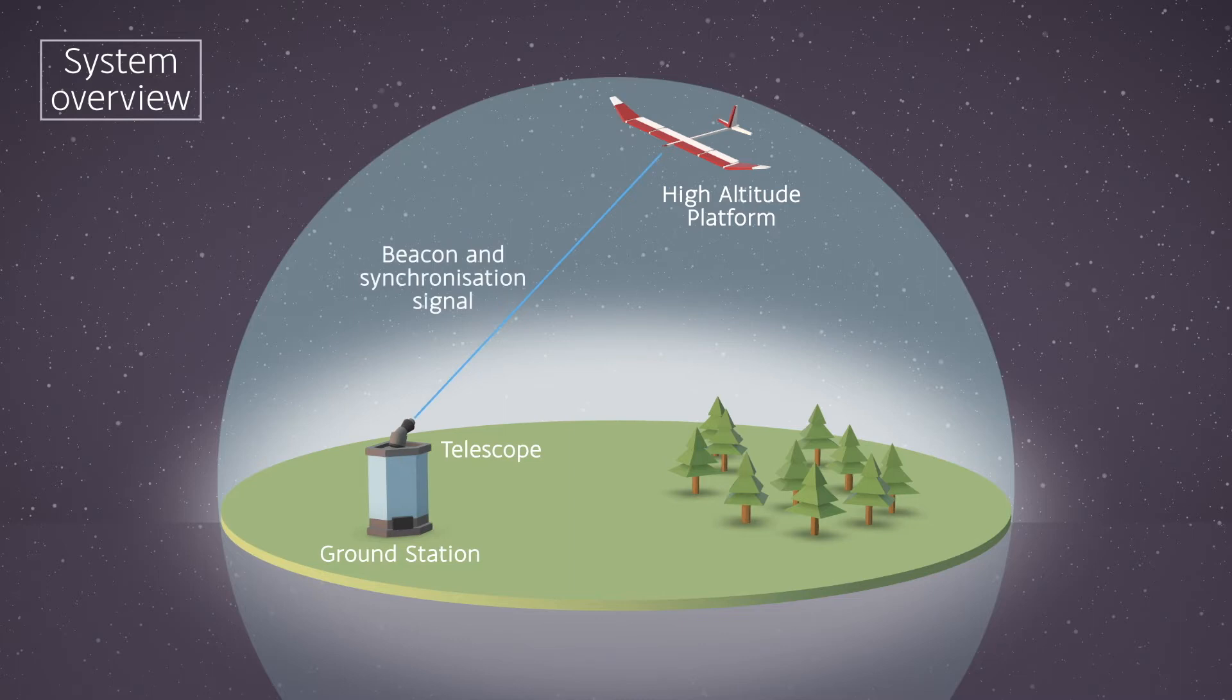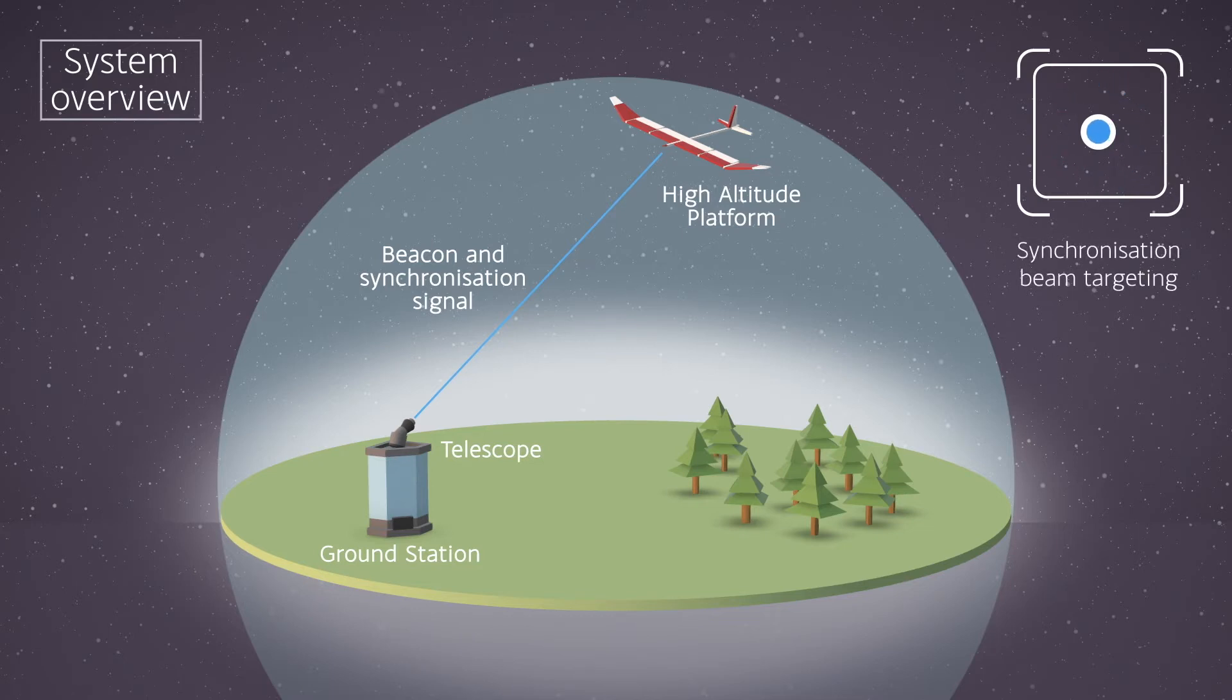One is the beacon and synchronization signal, allowing the transmitter and optical ground station to share a common starting point for timing, which is essential for the communications.